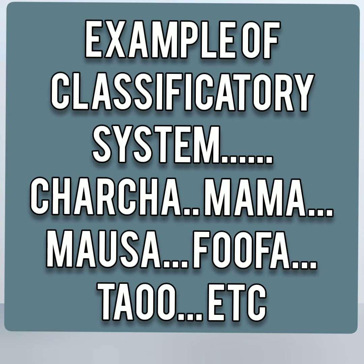This is the descriptive system of kinship. Under the descriptive system, one term refers to only one relation — it describes the exact relation of a person towards another. For instance, 'father' and 'mother' are descriptive terms.